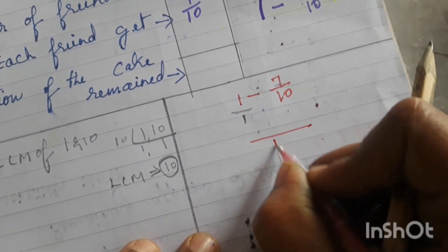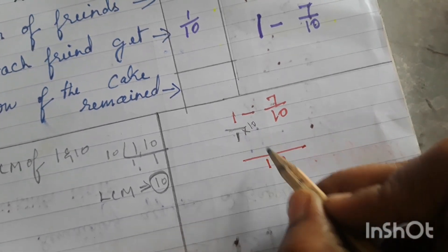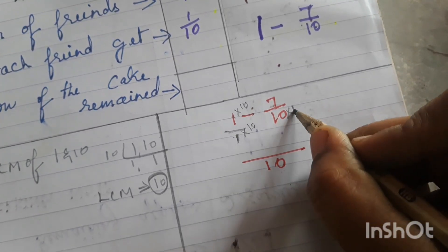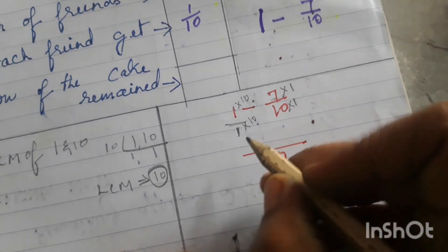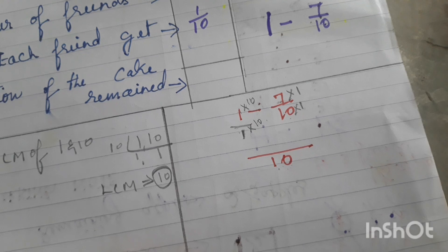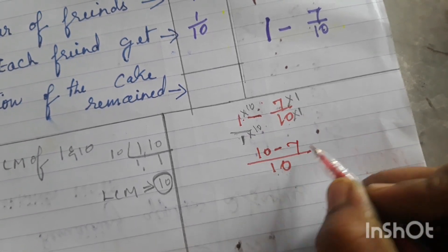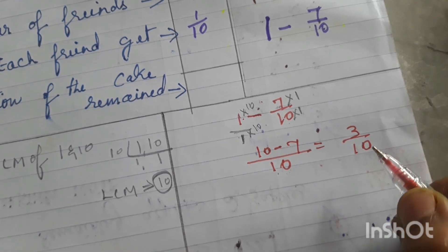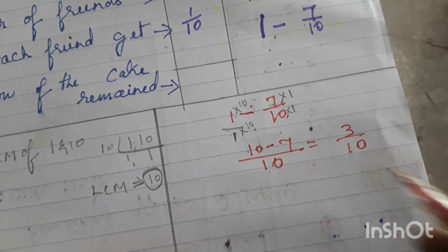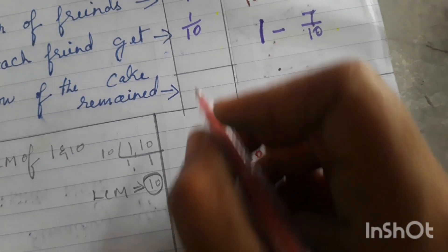LCM is 10. Equalize denominators: 1 over 1 — multiply numerator by 10, giving 10 by 10. Minus seven by 10. Now write the numerator: 10 minus 7 is 3. So the answer is 3 by 10. We can't convert this into a mixed fraction since it's a proper fraction. The remaining portion of the cake is 3 by 10.